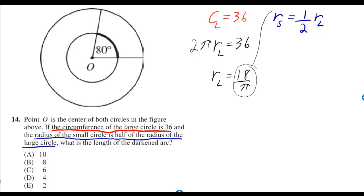Then we can plug that in to figure out the radius of the small circle. So the radius of the small circle is half of 18 over π. 18 over 2 is 9, so the radius of the small circle is 9 over π.